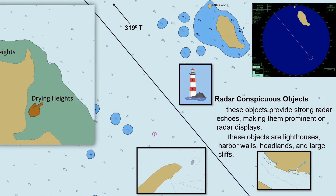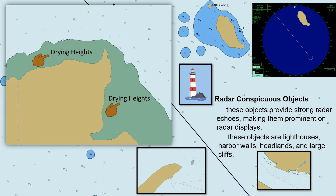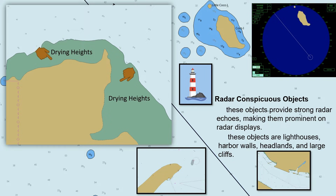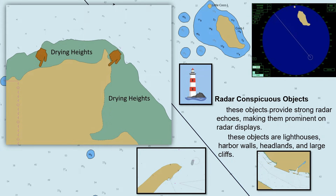Shorelines with drying heights are not reliable as a reference point, because they might be above the water during the passage. The color green indicated in our charts is the shoreline with drying heights. These areas of the shore are exposed at low tide but submerged at high tide, so this is not a reliable reference point for parallel indexing.